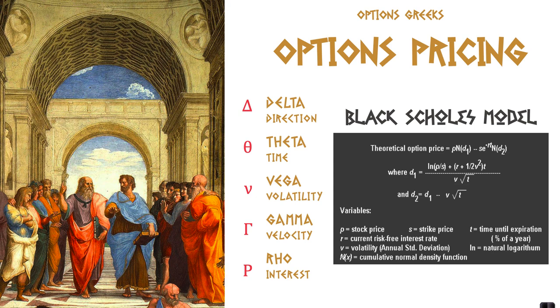You'll recall that the options pricing model is the Black-Scholes model. And inside the Black-Scholes model, there are several variables: there's Delta, Theta, Vega, Gamma, and Rho.